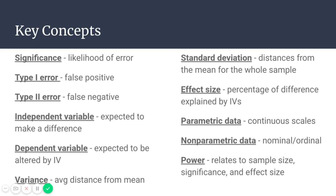You have variables that you're looking at in statistics. The independent variable is the one that you expect to actually make a difference — it's the thing that you're doing, maybe your intervention or the thing that you think will cause a change. A dependent variable is expected to be altered in some way by that independent variable. Variance is the average distance from the mean.